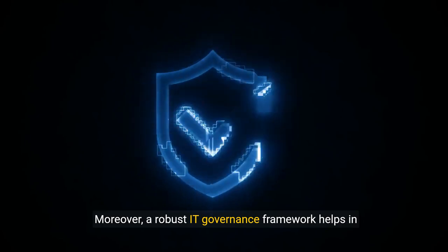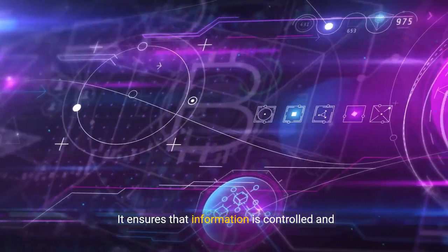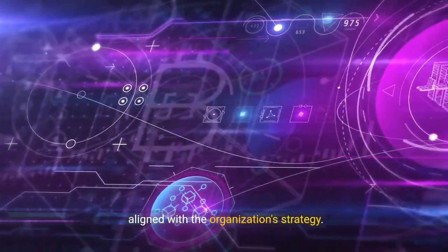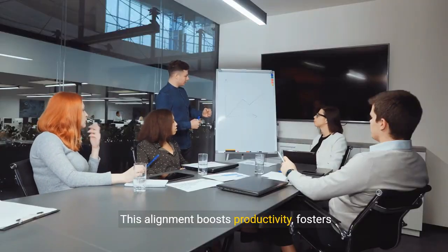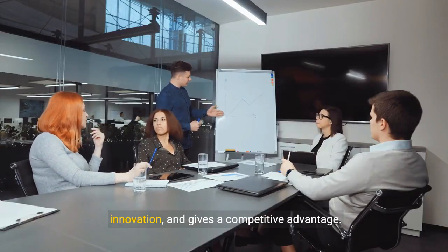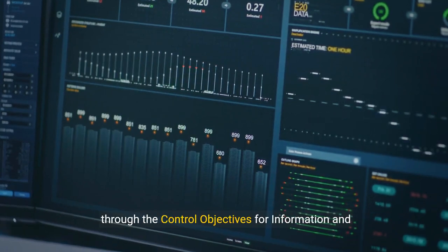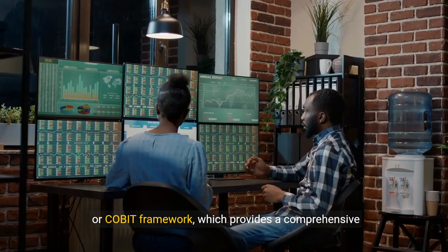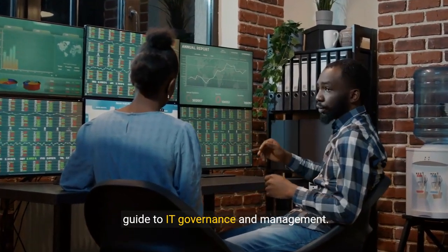Moreover, a robust IT governance framework helps in managing risks associated with IT. It ensures that information is controlled and aligned with the organization's strategy. This alignment boosts productivity, fosters innovation, and gives a competitive advantage. As we delve deeper into this video, we'll explore these concepts in detail and walk you through the Control Objectives for Information and Related Technologies, or COBIT framework, which provides a comprehensive guide to IT governance and management.